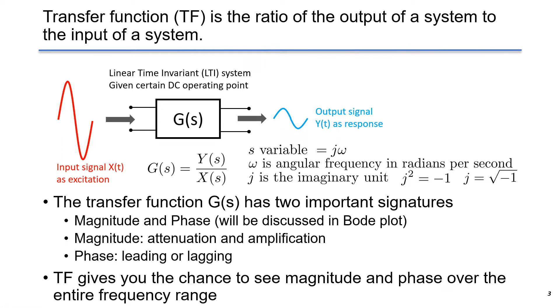The transfer function is the ratio of the output of a system to the input of the system. Given a linear time invariant system, LTI, we have input signal X as excitation and the output signal Y of T as response. The transfer function G of S is defined as Y of S over X of S. S is a Laplace variable which is defined as j times omega. Omega is angular frequency in radians per second, and j, or sometimes called i, is the imaginary unit. J squared equals minus 1, and j is the square root of minus 1.